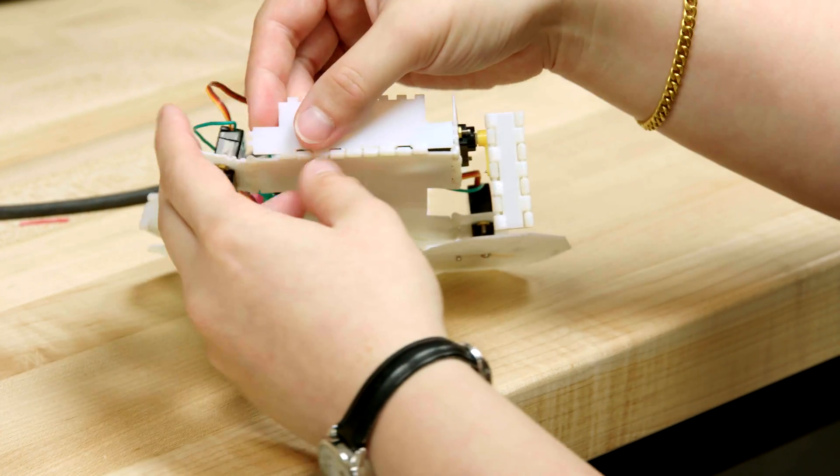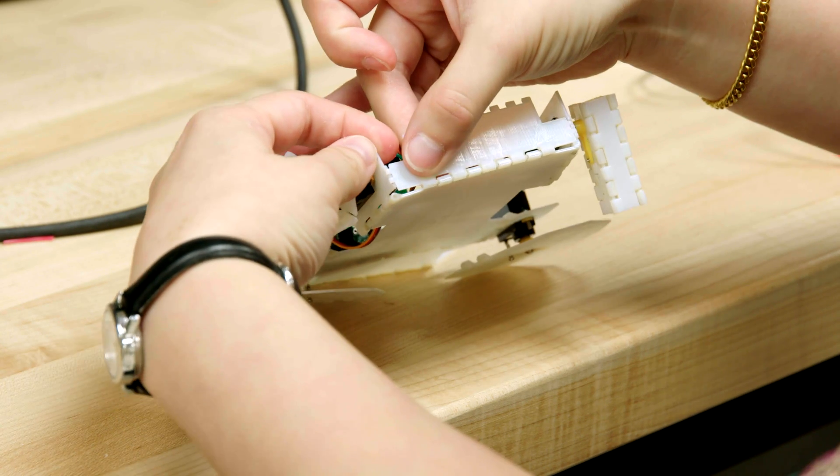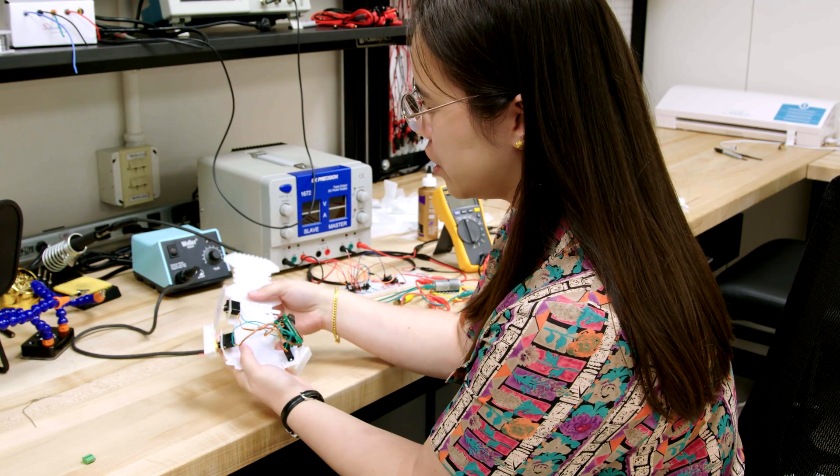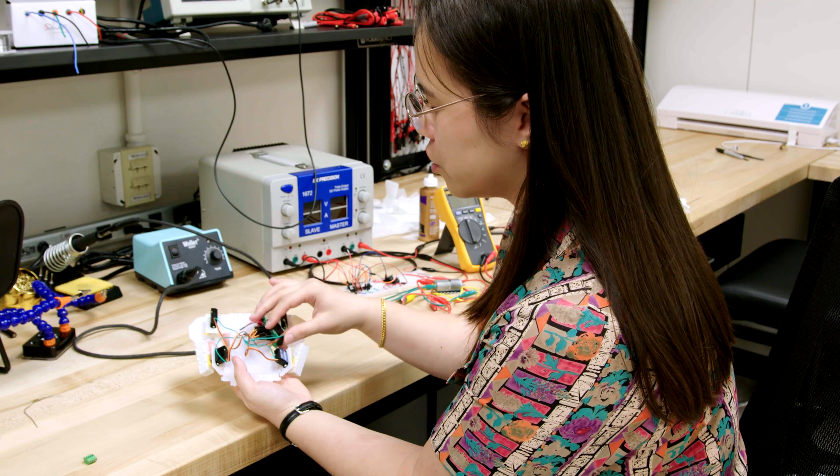Origami robots are really useful when we want compact storage and transport because you can fold your robot to a compact shape or unfold it into its platform and transport it to other places with minimal packaging.